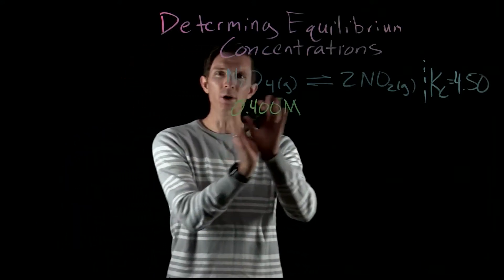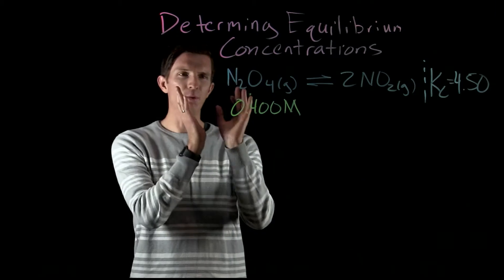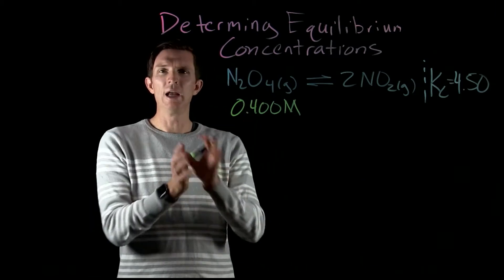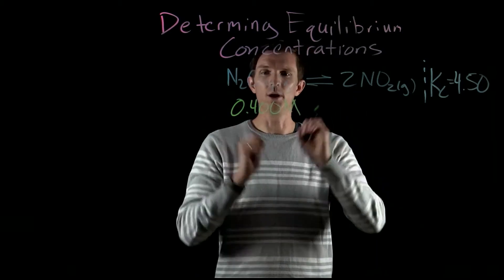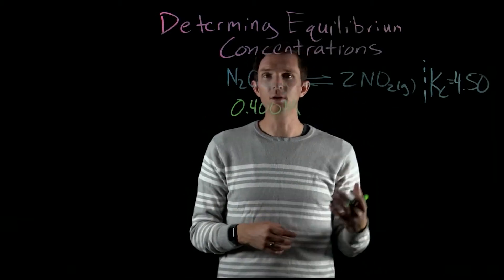Now if we were to say this is just a one-way reaction, if I start with 0.4 molarity of N2O4 and it completely reacts, we would say we would get twice as that, right, 2 to 1, 0.8 molarity of NO2.